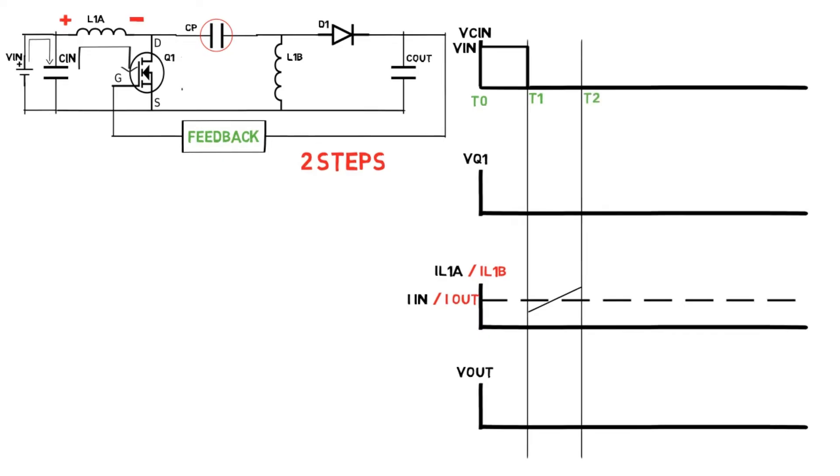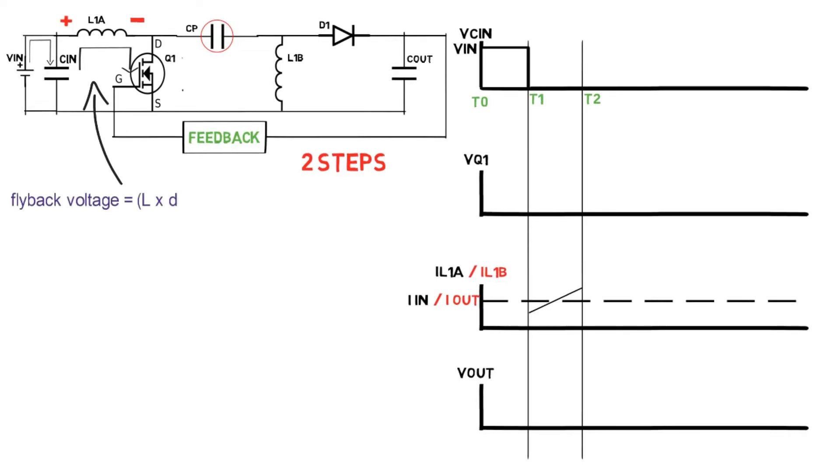Now Q1 is turned off at time T2. Input capacitance gets charged, and due to change in current, the flyback voltage of value L into di by dt is induced inside the inductor. Now the voltage across Q1 is L into di by dt plus input voltage.